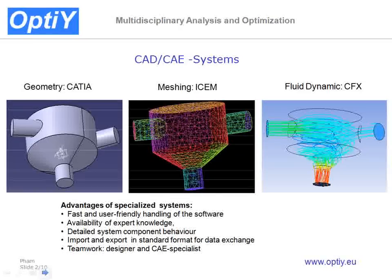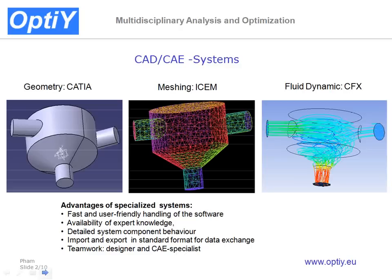For simulating the physical behavior of the static mixer, we use different CAD and CAE software systems: CATIA for geometry modeling, ICM for meshing of geometry, and CFX for fluid dynamics. The advantages of specialized systems are, for example, fast and user-friendly handling of the software and availability of expert knowledge.